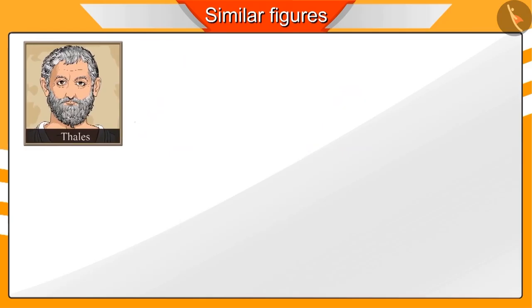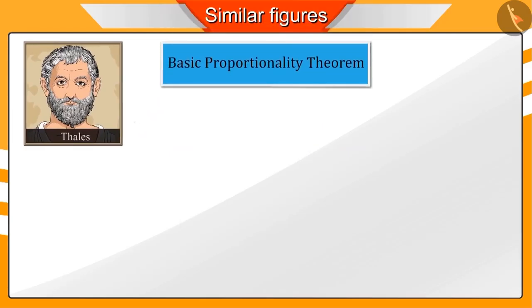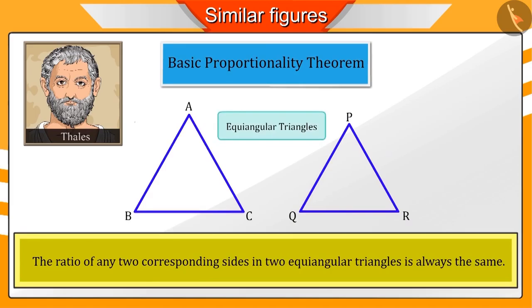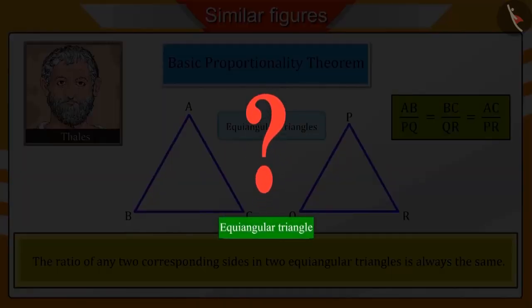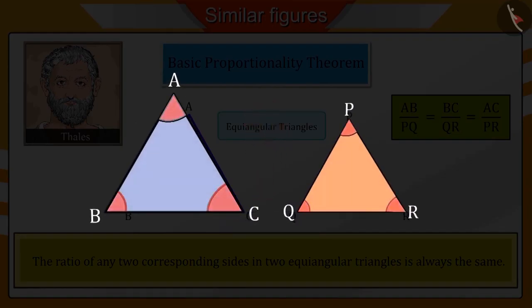Famous mathematician Thales has given a conclusion by using the Basic Proportionality Theorem that the ratio of any two corresponding sides in two equiangular triangles is always the same. Can you tell what are equiangular triangles? Triangles which have equal corresponding angles are called equiangular triangles.